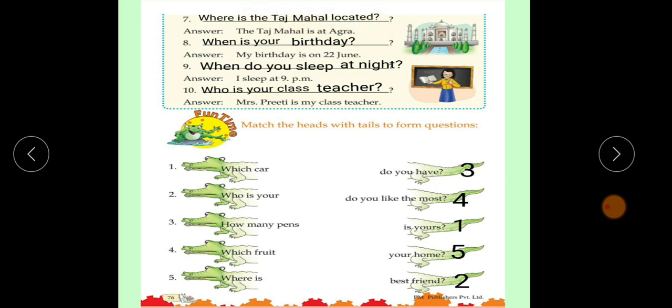Number 8. My birthday is on 22 June. The question is, when is your birthday? Aapka birthday kab hai? Number 9. I sleep at 9 pm. When do you sleep at night? Aap raat ko kab sote ho?